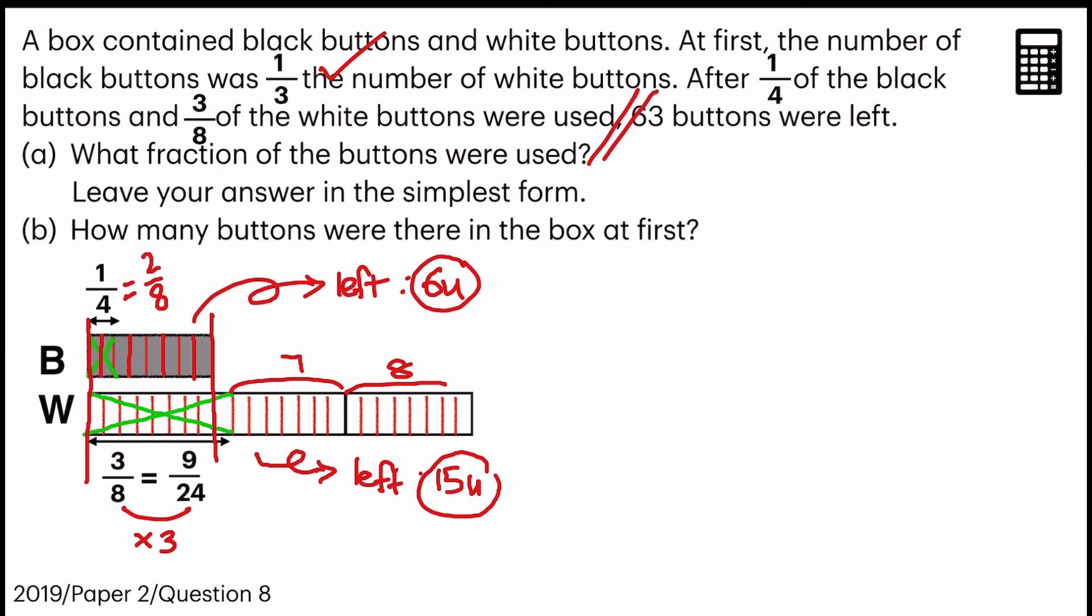A asked what fraction of the buttons were used. So the total units would have been eight plus 24. How did I get that? Eight from here, 24 from here. Okay. And it's equal to 32.